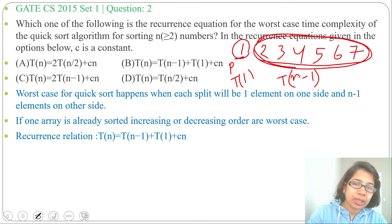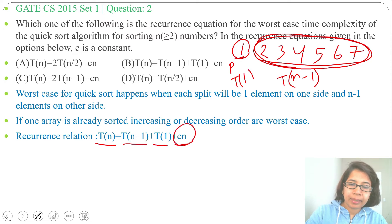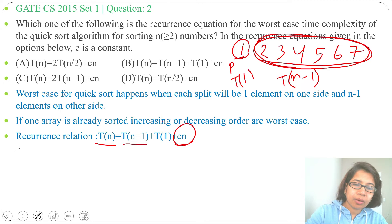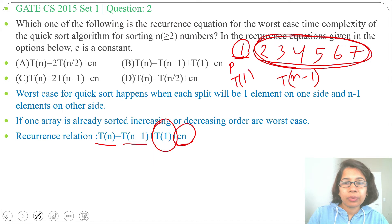So the recurrence relation will be T(n) = T(n-1) + T(1) + cn. Here, cn is for the partition step, and T(1) is for the one-element side — if there is one element, we don't need to do QuickSort again as it is already sorted.